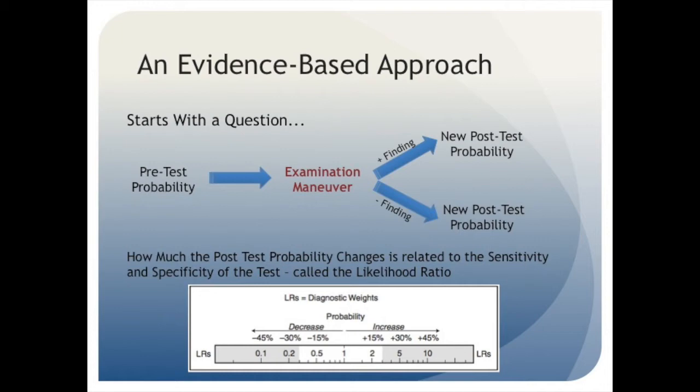How much a given physical exam maneuver changes your pre-test probability depends on the sensitivity and specificity of the test, which in this case is expressed as a function called the likelihood ratio. You can see in the figure how a positive or negative likelihood ratio can affect your pre-test probability either a great deal, for example, if you have a positive likelihood ratio of 10 or more, or barely at all, for example, a likelihood ratio close to 1.